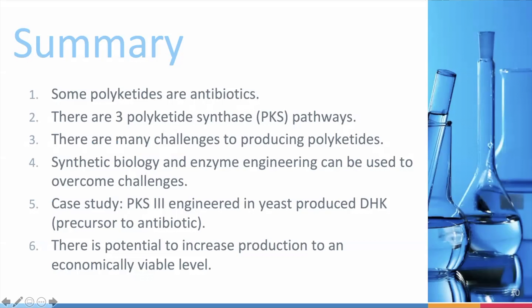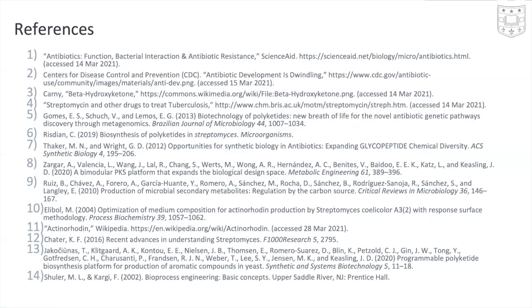In summary: some polyketides can be used as antibiotics; there are three kinds of PKS pathways; there are many challenges to overcome in producing polyketides at scale; and synthetic biology and enzyme engineering can be used to address these challenges. In the case study, PKS type 3 engineering in yeast produced DHK, a precursor to antibiotics, showing potential to increase production to an economically viable level. Further study and development is still needed. Thank you for listening.